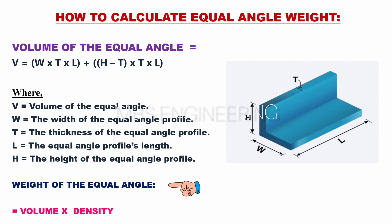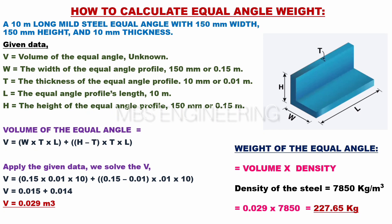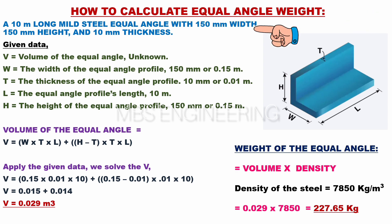Next, the weight of the equal angle. For example, a 10-meter long mild steel equal angle with 100 millimeters width, 100 millimeters height, and 10 millimeters thickness.